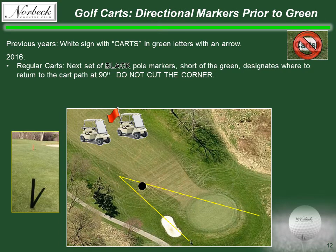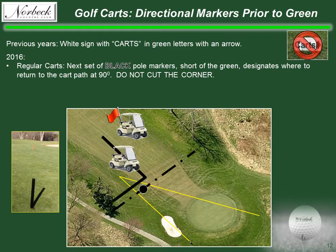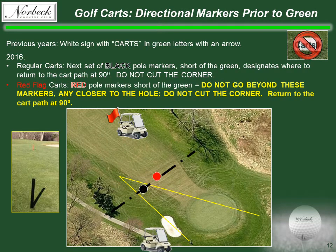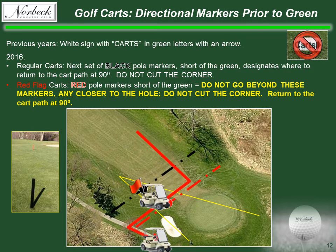Instead, you will see a series of colored pole markers. Replacing the old white signs short of the green will be black pole markers. Unless you are a red flag holder, the cart must return to the cart path at 90 degrees — do not cut the corner. Regular carts will not proceed past this point. If you are a red flag holder, you can proceed beyond the black pole markers but will not go past the red pole markers. Once you reach the red markers, return to the cart path at 90 degrees.